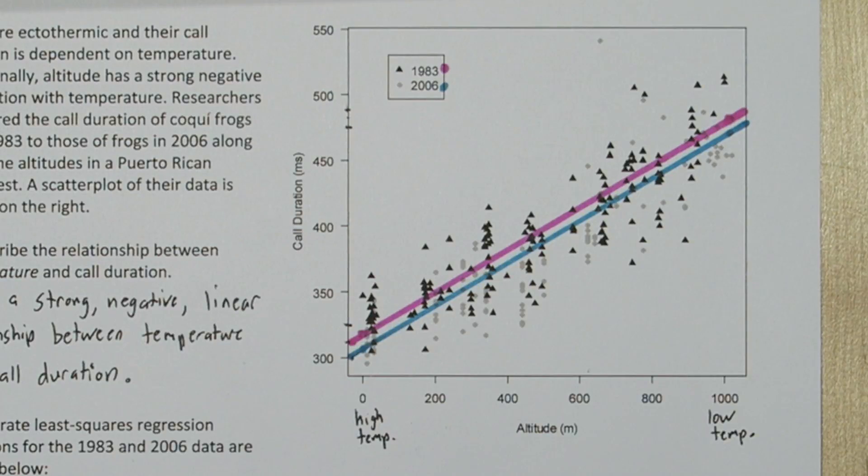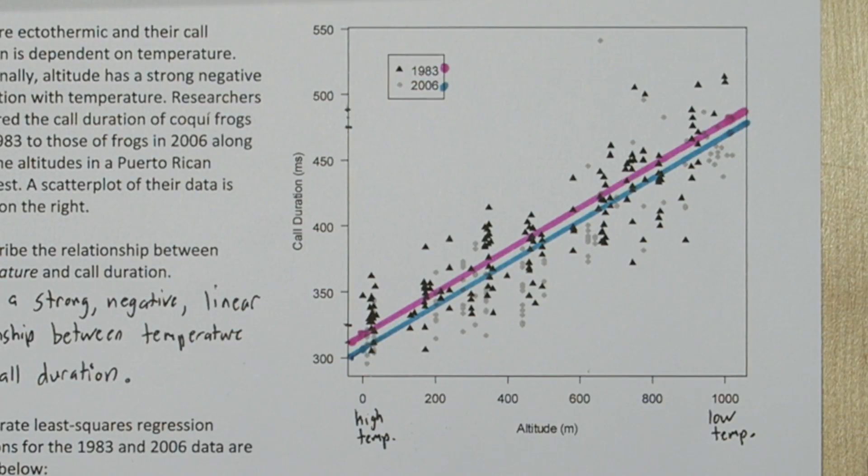But when we look at our scatter plot, there is a difference between 1983 and the 2006 least squares regression lines. But it's not the slope. The lines are roughly parallel. The difference is in the y-intercept, and that's what Part D is about.